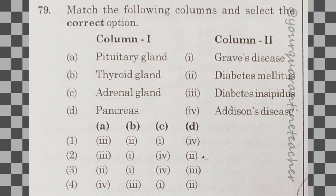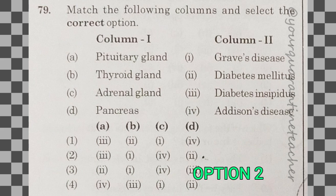79th question — a direct question. The answer is option 2: pituitary gland — diabetes insipidus; thyroid gland — Graves' disease; adrenal gland — Addison's disease; pancreas — diabetes mellitus.